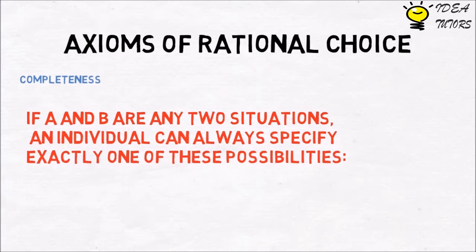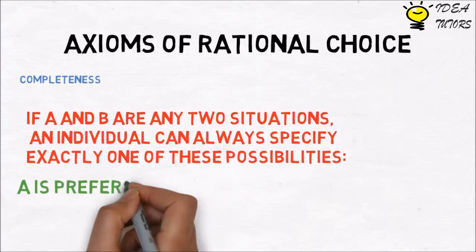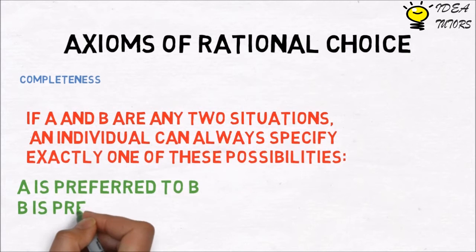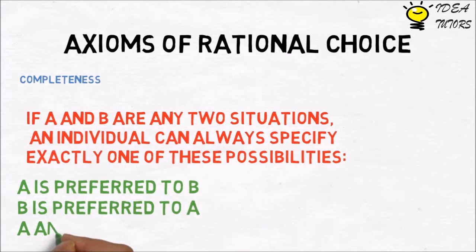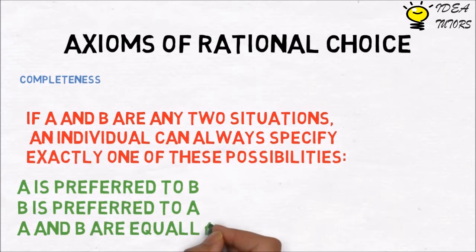A is preferred to B, B is preferred to A, or A and B are equally attractive. Completeness here means that consumer can compare two sets of goods.